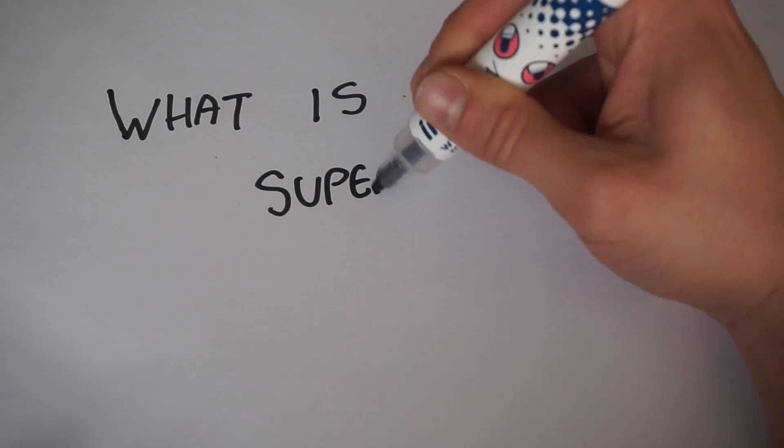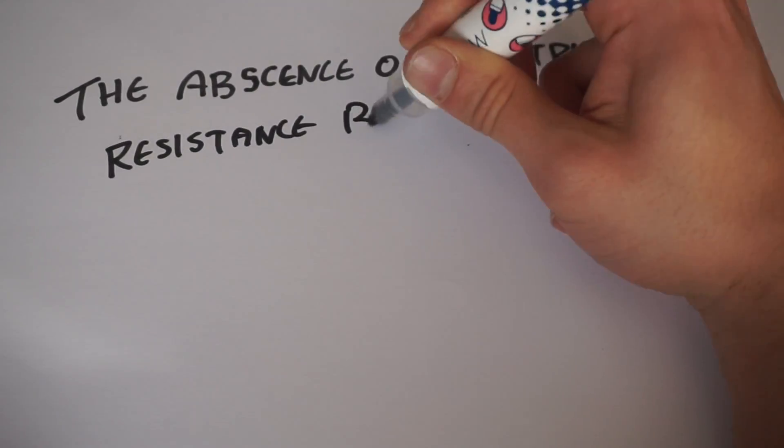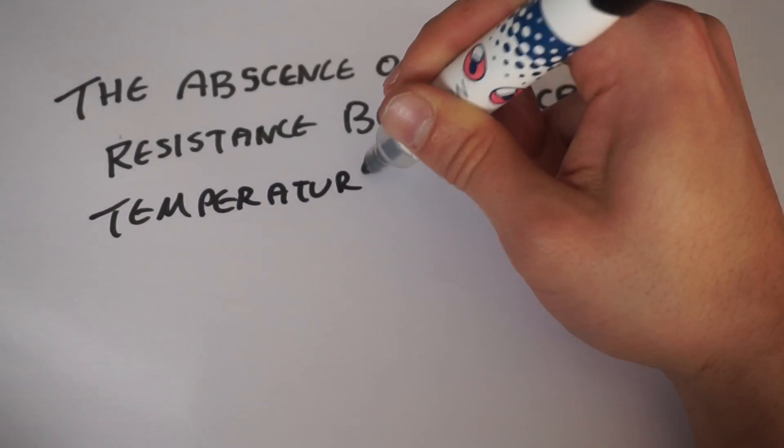So firstly, what is superconductivity? Superconductivity is defined as the absence of electrical resistance in a material below a certain critical temperature, known as TC.